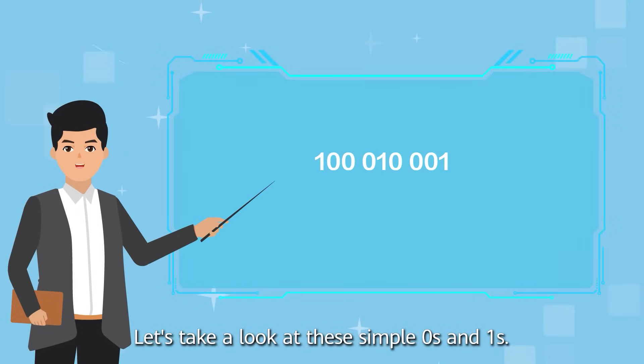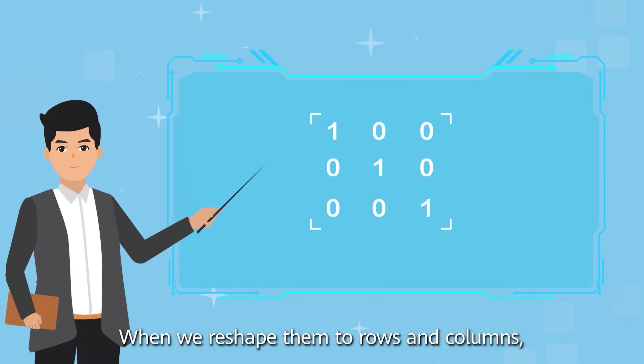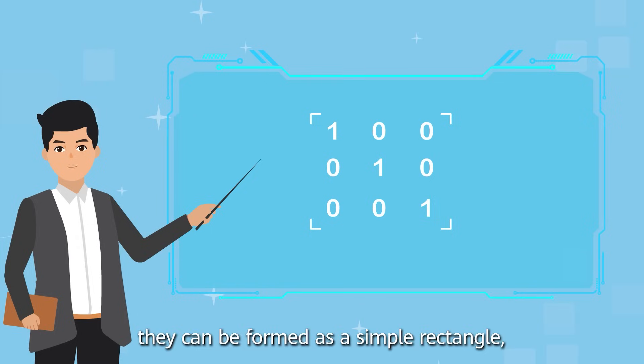Let's take a look at these simple zeros and ones. When we reshape them to rows and columns, they can be formed as a simple rectangle, called a matrix.